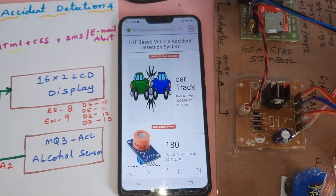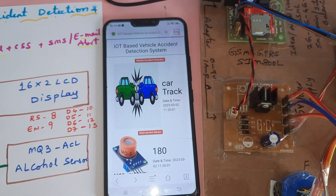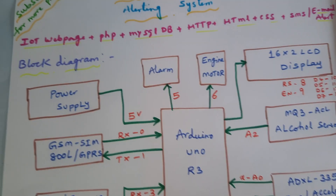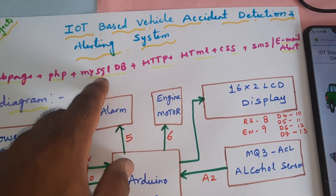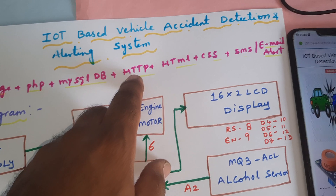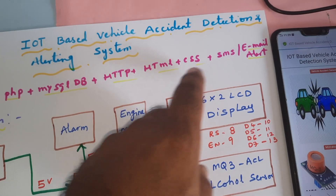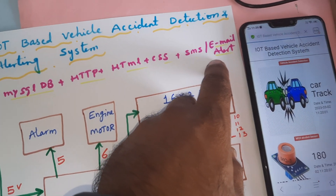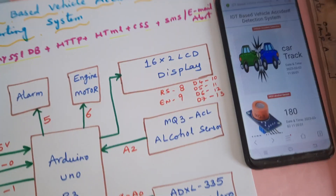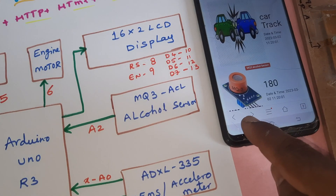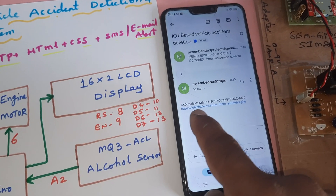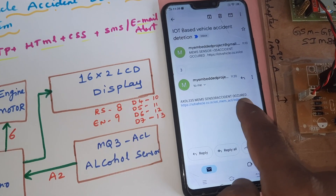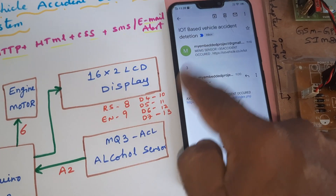The IoT vehicle accident alerting system uses a web page with PHP, MySQL DB, HTTP, HTML, CSS, SMS alert, and email alert. We are also getting email alerts on our phone when an accident is detected.